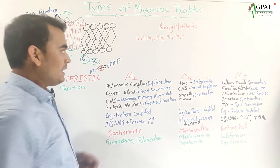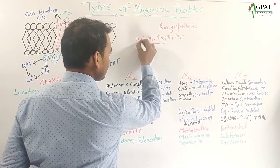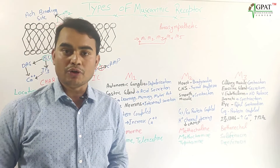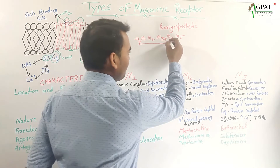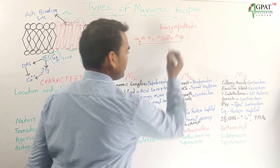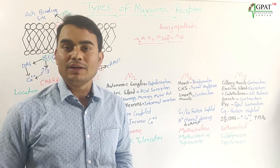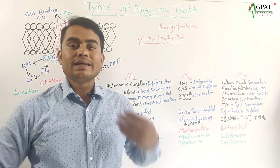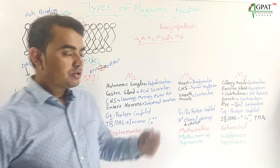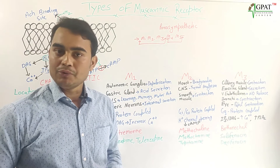Out of these five types, M1, M2, and M3 are mainly broadly distributed in our body, while M4 and M5 have limited access — they are mainly in the CNS portions, where they function to regulate the secretions or release of other neurotransmitters. So here we are going to discuss the first three: M1, M2, and M3 receptors.